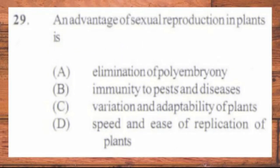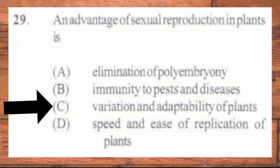Question number 29. An advantage of sexual reproduction in plants is: A. Elimination of polyembryony, B. Immunity to pests and diseases, C. Variation and adaptability of plants, D. Speed and ease of replication of plants. The answer is C, variation and adaptability of plants. Sexual reproduction always results in variation of new plants and animals.